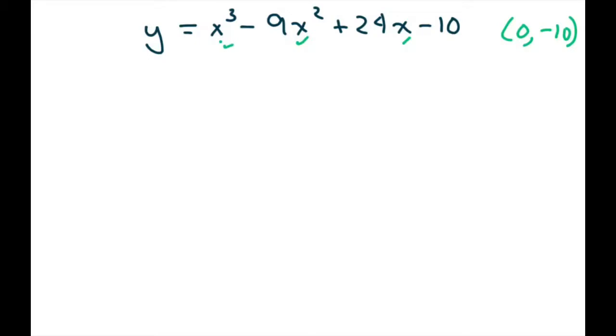This is not factorable, so the x-intercepts are not easy to find. If the cubic function isn't easily factored, you can always skip this step on the AP calculus exam.